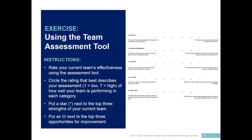The student will put a star next to the top three strengths of their current team, and they will put an O next to the top three opportunities for improvement. The nine dimensions also happen to mirror the units within the course itself.